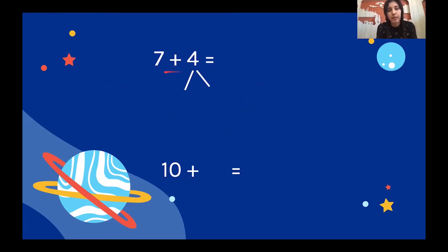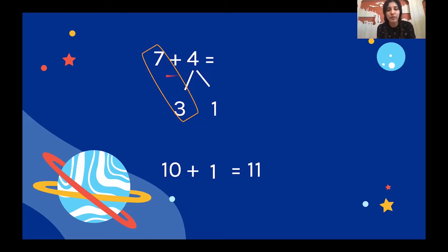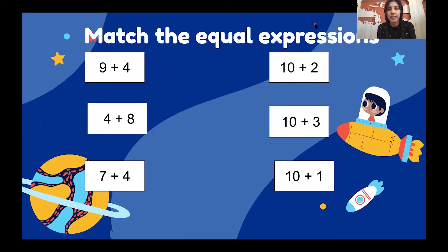Now let's find the number bonds for seven plus four. Remember how many more the seven is missing to make ten? Three. So three plus one is four. If we circle that, it makes ten because seven plus three is ten. What's left? One. So it goes here: ten plus one equals eleven, and seven plus four equals eleven.